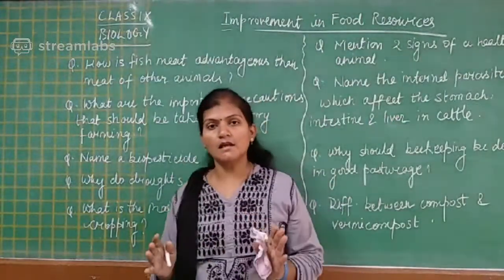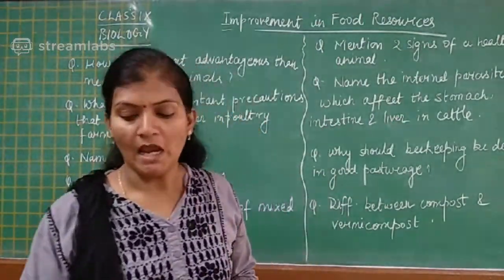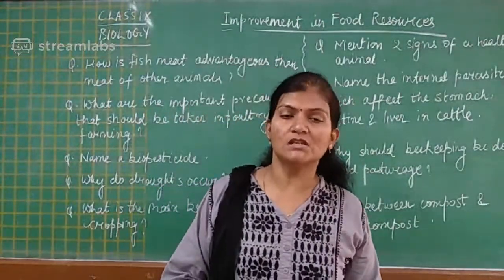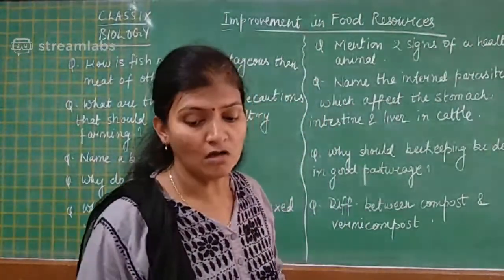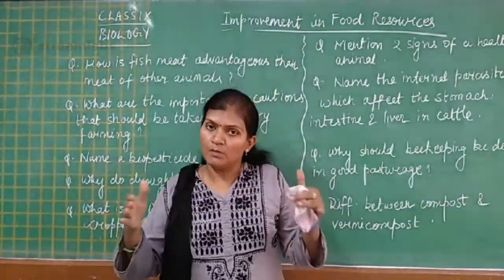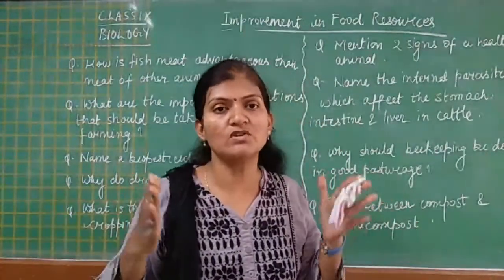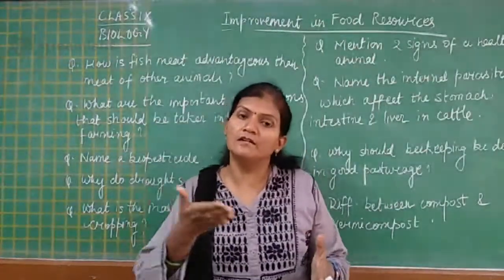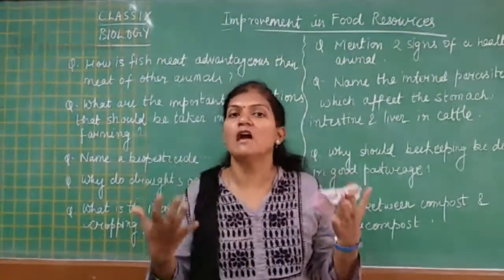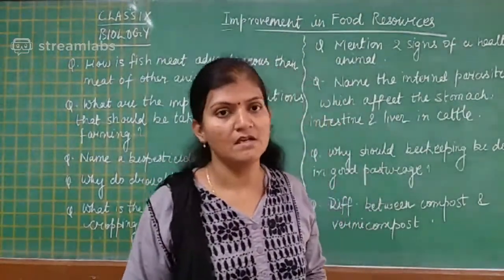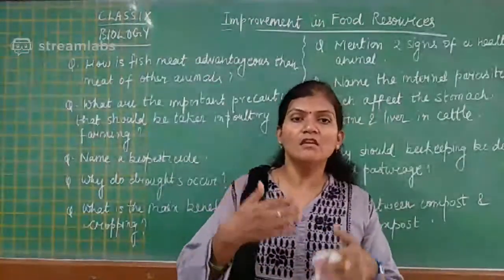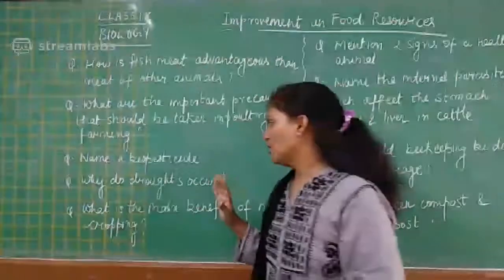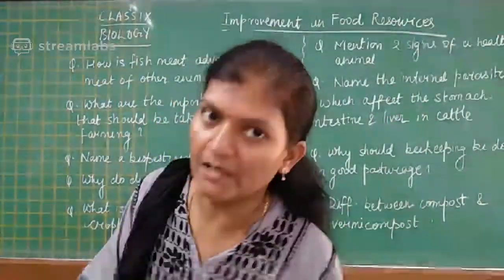The next question is: why does drought occur? Drought is a condition in which a particular area does not receive rainfall for a continuous period of years, causing the soil to become so dry that crop growth decreases, animals start dying, and people start migrating from that place. The non-availability of rain in a particular area for many years is known as drought.